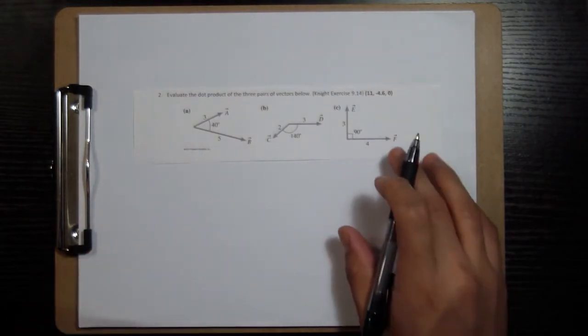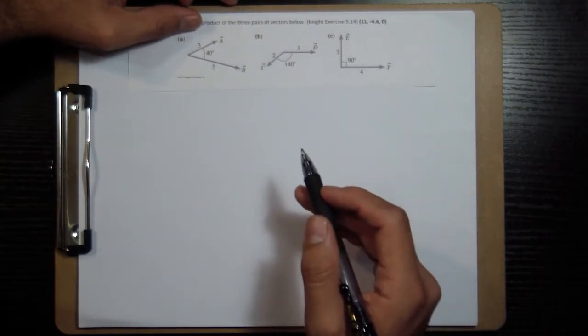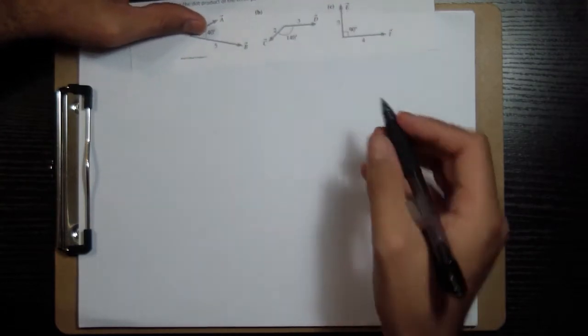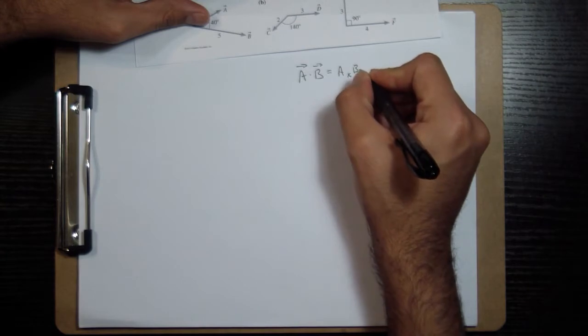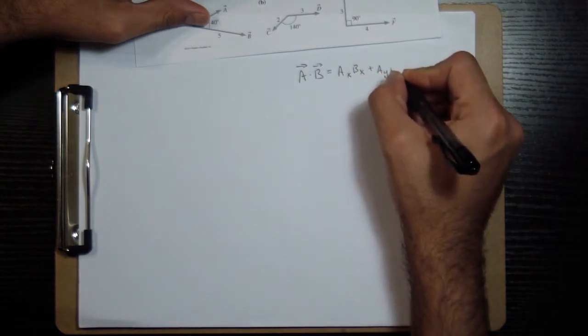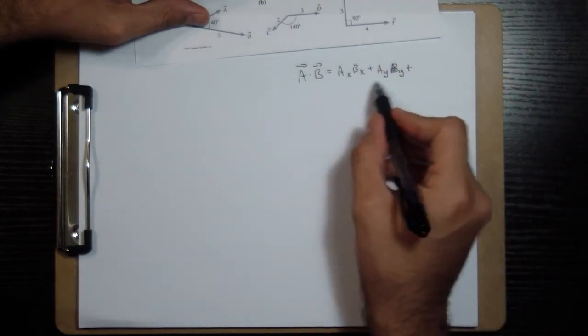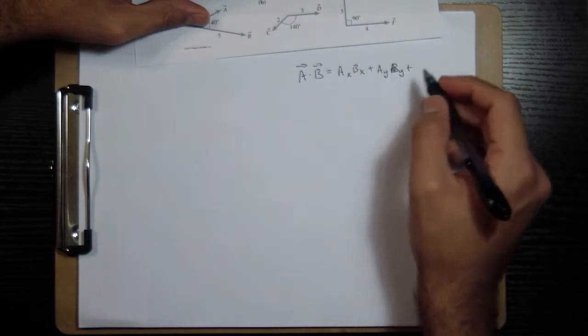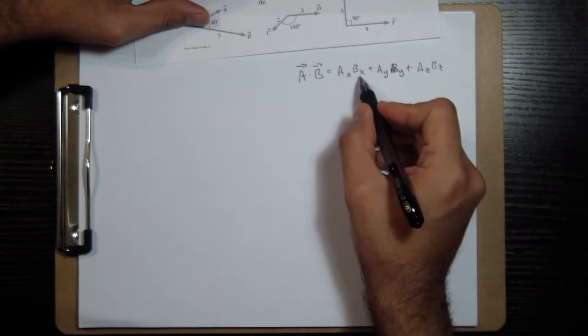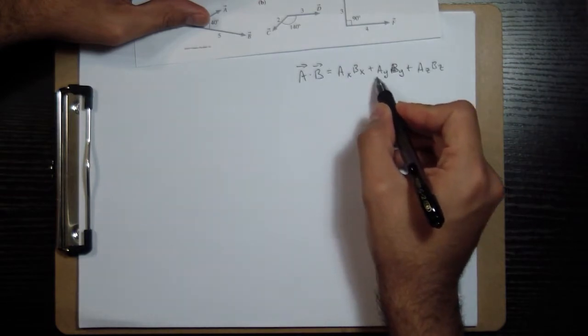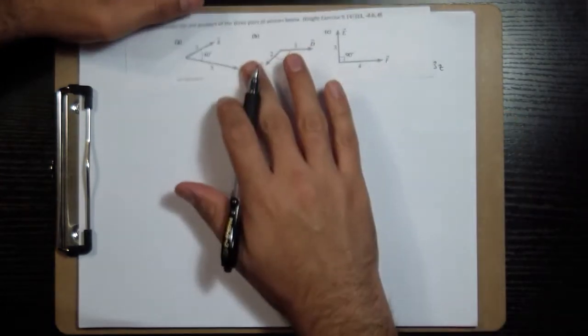So remember that for the dot product, there are two equations depending on whether or not you have them in coordinates. A dot B equals the sum of the components: Ax times Bx plus Ay times By. This is for two-dimensional vectors, and if you have a third dimension, you add Az times Bz, where this is the X component of A, the X component of B, the Y component of A, the Y component of B.